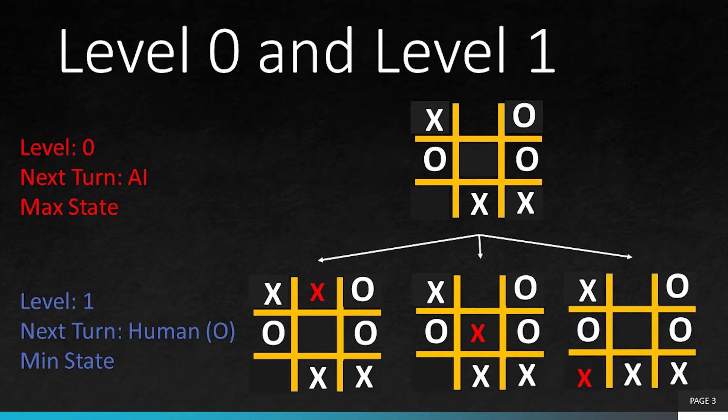In order to make sure that it will never lose, it needs to cover all the possibilities and needs to be absolutely sure that it will never lose. So we will go further down and look for other possibilities of all three choices at level 1.